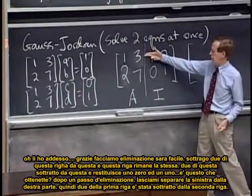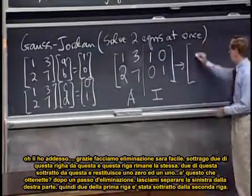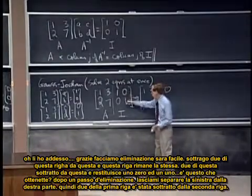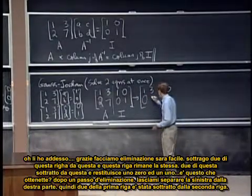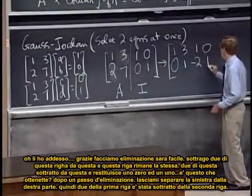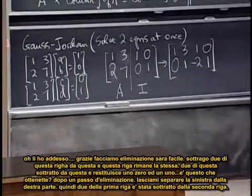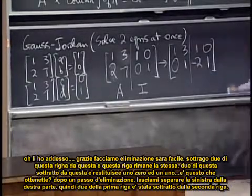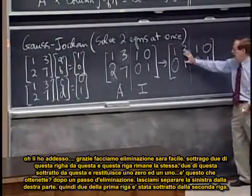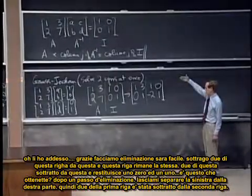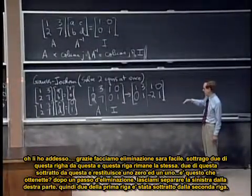So I take two of this row away from this row. So this row stays the same. And two of those come away from this, that leaves me with a zero and a one, and two of these away from this. Is that what you're getting? After one elimination step, let me sort of separate the left half from the right half. So two of that first row got subtracted from the second row.